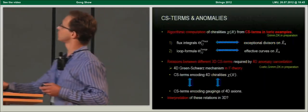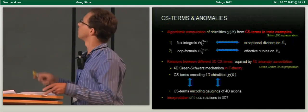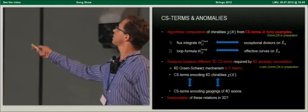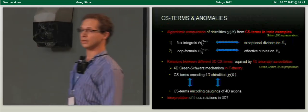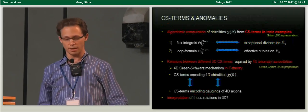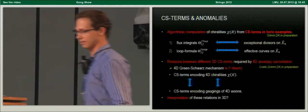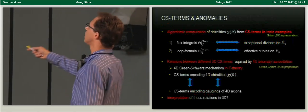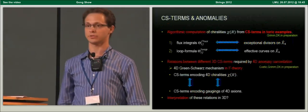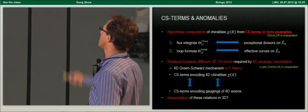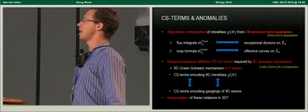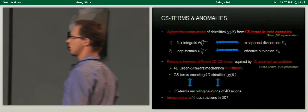This relation between 4D and 3D physics allows us to algorithmically compute the chiral index from Chern-Simons terms in F-theory examples realized as toric models. In particular, we expect relations between 3D Chern-Simons terms from the requirement of four-dimensional anomaly cancellation, and it would be very nice to understand this in a purely three-dimensional perspective.